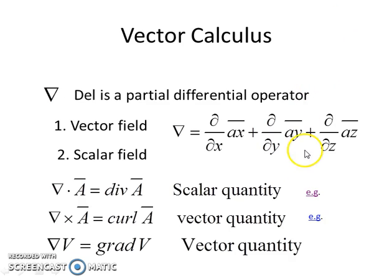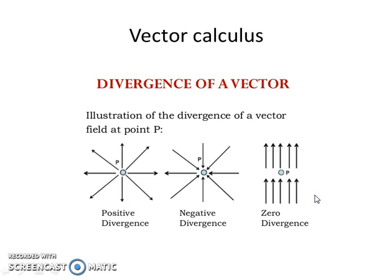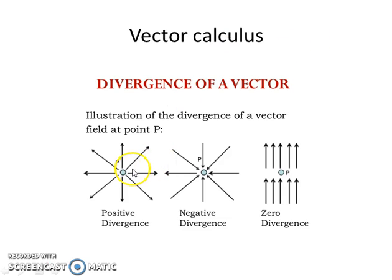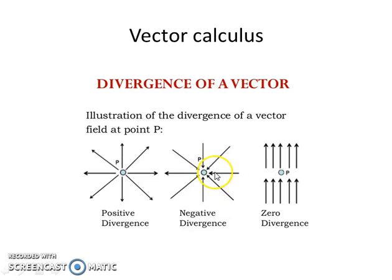We will see examples of divergence and curl one by one. Divergence results in a scalar quantity, so it can be positive, negative, or zero. The first figure on the slide shows positive divergence — spreading of the field in the outward direction. The second figure is an example of negative divergence, meaning convergence of the field at that point. The third figure shows zero divergence, where incoming field equals outgoing field.